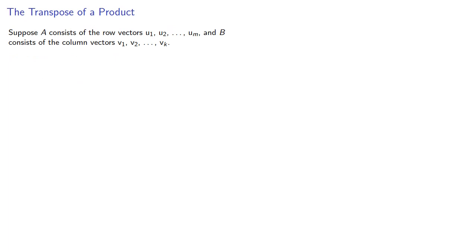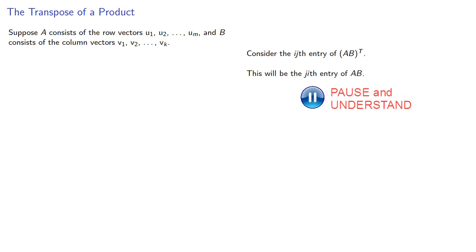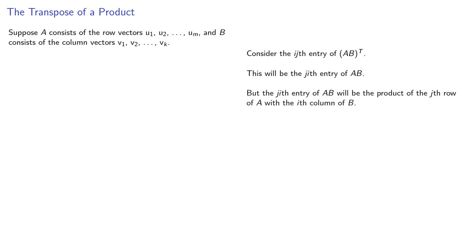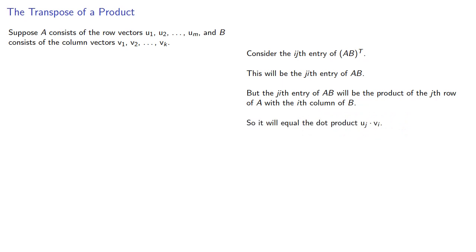Suppose A consists of the row vectors U1 through UM, and B consists of the column vectors V1 through VK. We'll assume these vectors are the same size so we can form the dot product. Consider the (i,j)-th entry of (AB)-transpose. The transpose turns rows into columns and columns into rows, so this will be the (j,i)-th entry of the product AB. The (j,i)-th entry of AB is the product of the j-th row of A with the i-th column of B, so it equals the dot product U_j dot V_i.